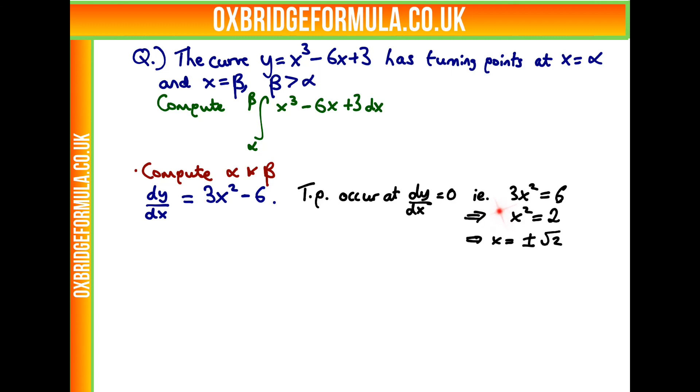Or equivalently, x squared is equal to 2, and square rooting this gives us x equals plus or minus root 2. Now, these give us beta and alpha. Which one's beta and which one's alpha? Because beta is bigger than alpha, we choose beta to be root 2, and we choose alpha to be minus root 2.